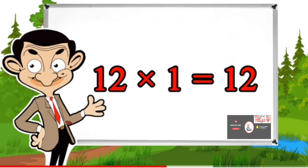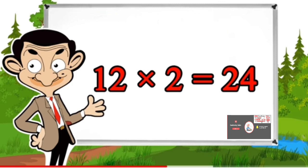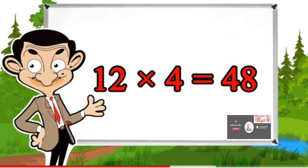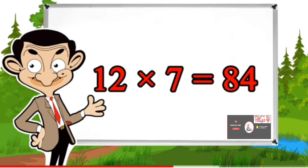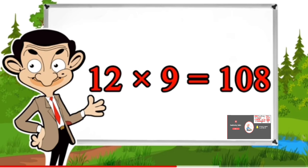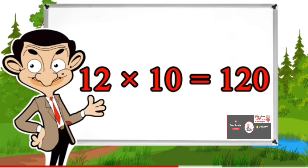Table of 12: 12×1=12, 12×2=24, 12×3=36, 12×4=48, 12×5=60, 12×6=72, 12×7=84, 12×8=96, 12×9=108, 12×10=120.